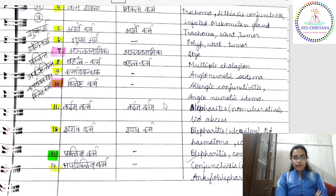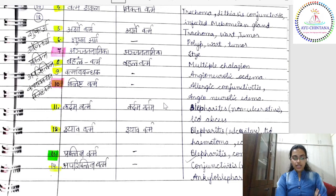Repeating from the first — repeat after me while muted so you will remember: Utsangini Sannipataja, Kumbhika Sannipataja, Potaki Kaphaja, Vartma Sharkara Sannipataja, Arsho Vartma Sannipataja, Shushka Arsha Sannipataja. Seventh, Anjana Namika is Raktaja. Eighth and ninth — Bahalam Vartma and Vartmaava Bandhaka — are Sannipataja. And Klishta Vartma is Raktaja.